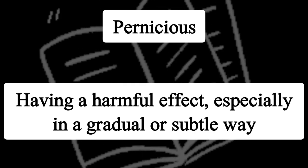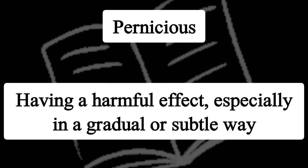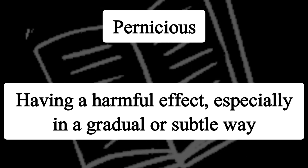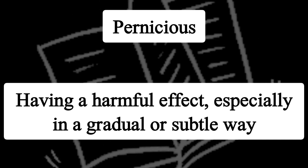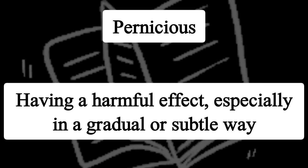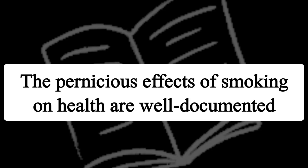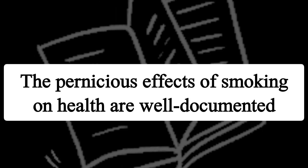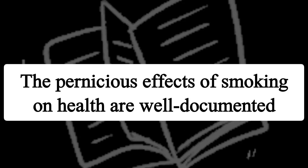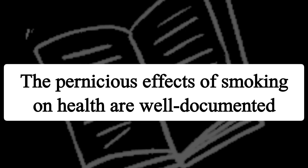Next word, pernicious. Iska matlab hai bhoat harmful effect hona, par bhoat dhire dhire, gradually in a subtle way. For example, smoking ke health peh pernicious effects hote hai — gradual hote hai par hamesha harmful hote hai.